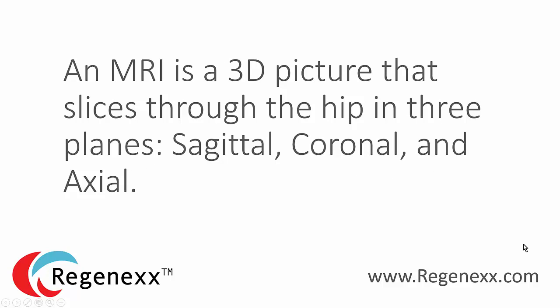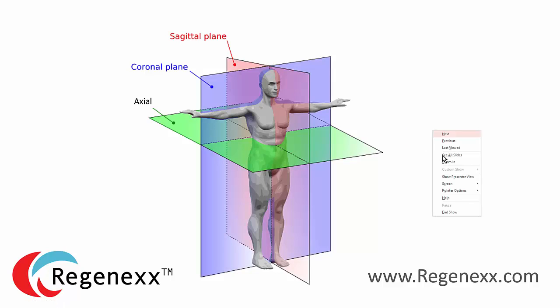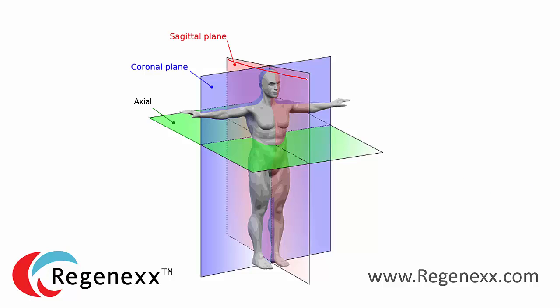An MRI is a 3D picture that slices through the hip in three planes: sagittal, coronal, and axial. Kind of like slicing through a tomato or an onion, you're slicing through the body. The coronal plane is a front view, the sagittal is a side view, and the axial is a sort of sawed-in-half view.